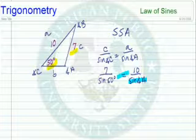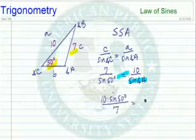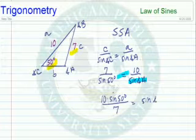So I've got 10 times the sine of 50 degrees divided by 7 is going to give me a decimal number that I can look up on a table to find angle A.